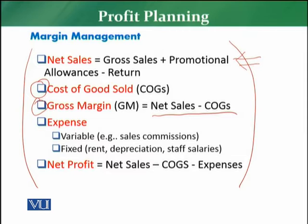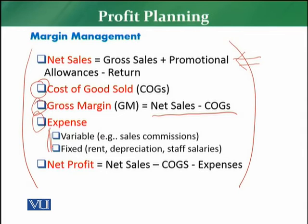The fourth element in margin management is expenses. Expenses are of two types: variable expenses and fixed expenses. For example, commissions or incentives given to staff are variable because they depend on business activity. Fixed expenses include rent, fixed salaries, and depreciation. So expenses are a combination of both fixed and variable. Adding fixed and variable expenses together gives total expenses, and the last item is net profit.